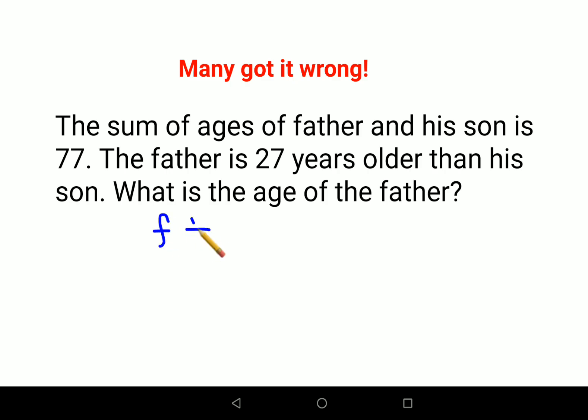So f plus s is what? 77. Okay, then we have father is 27 years older, means I can say f is what? s plus 27. So we have s plus 27 plus s equals to 77. So now subtracting 27 on both sides.